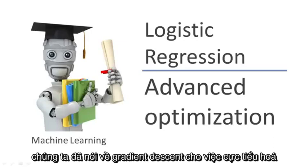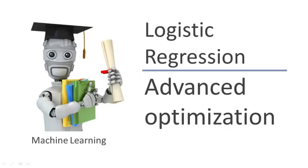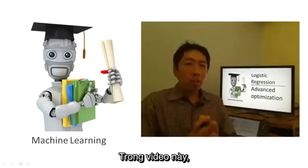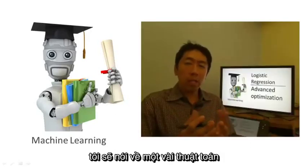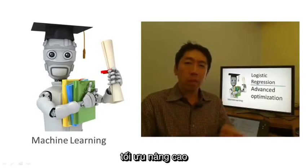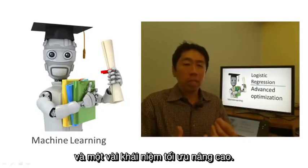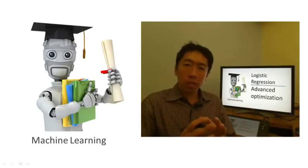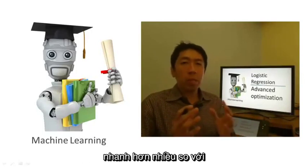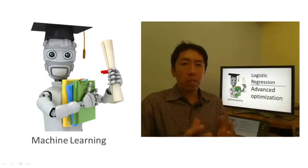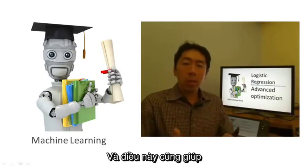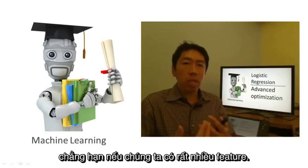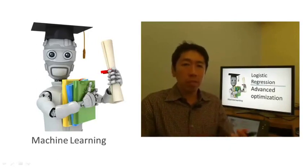In the last video, we talked about gradient descent for minimizing the cost function J of theta for logistic regression. In this video, I'd like to tell you about some advanced optimization algorithms and some advanced optimization concepts. Using some of these ideas, we'll be able to get logistic regression to run much more quickly than is possible with gradient descent, and this will also let the algorithms scale much better to very large machine learning problems, such as if we have a very large number of features.